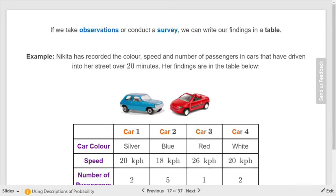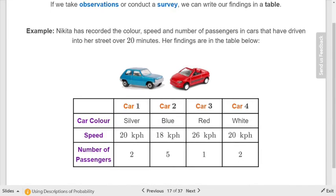The theoretical probability of rolling a one on a die is one in six. But if you actually rolled a die, it's very unlikely that that would happen. Remember we've talked about that in previous sections. If we take observations or a survey, we can write our findings in a table. You're going to see a lot of information written in these tables. These are called two-way tables.